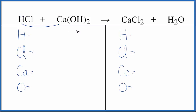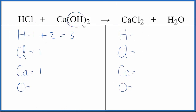Let's balance the equation. We have one hydrogen here, but don't forget we have the hydrogen over here too. Two times one is two, so one plus two gives three total hydrogen atoms. We have one chlorine and one calcium, and the two goes to everything in parentheses — two times one gives us two oxygen atoms. On the product side, we have two hydrogens, two chlorine atoms, one calcium, and one oxygen.